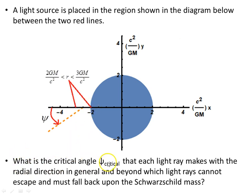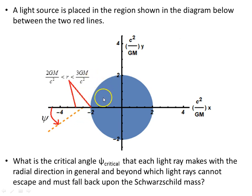What is the critical angle ψ_critical that each light ray makes with the radial direction, beyond which light rays cannot escape and must fall back upon the Schwarzschild mass? Those light rays below or above the source that are beyond the critical angle fall back onto the Schwarzschild mass. Those released within the critical angle — less than ψ — will escape off to infinity. So it's this angle we want to find.